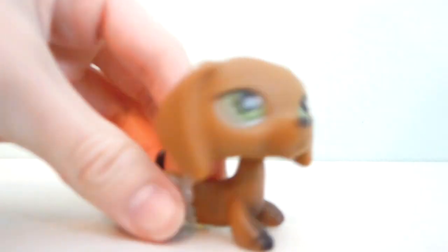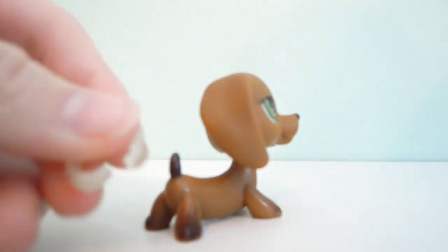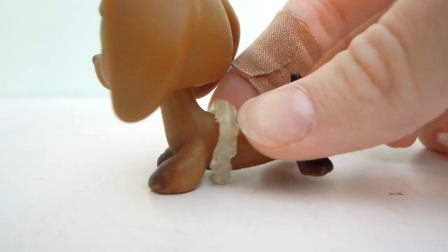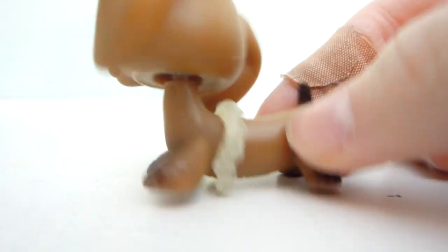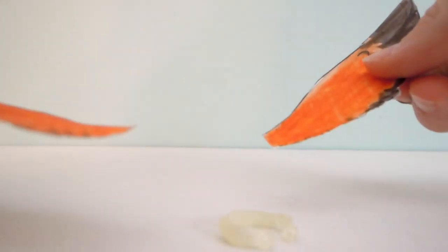After that, you adjust it and make it tighter by adding little bits of glue. This is the finished product of a customized ring. Next, we're going to apply the wings.